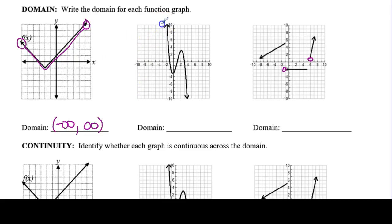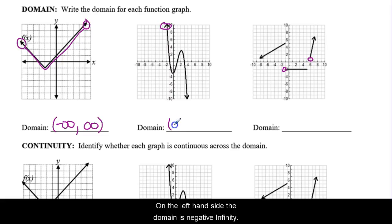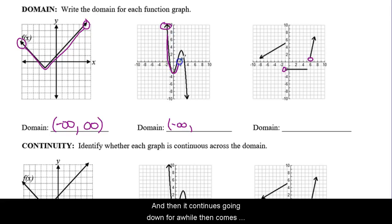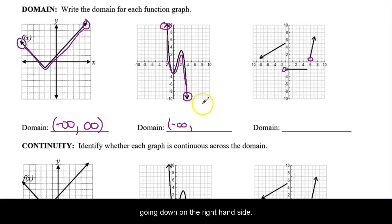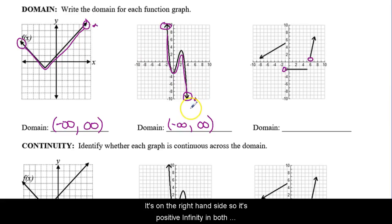In a second example, again on the left-hand side there is an arrow. This arrow is pointing up, but it doesn't matter if it's pointing up or pointing down. All that matters is that it exists on the left-hand side — the domain starts at negative infinity. Then it continues, goes down for a while, comes back up, then goes back down. An arrow on the right indicates infinity, whether it's going up as in the first example or down in the second. It's on the right-hand side, so it's positive infinity in both cases.